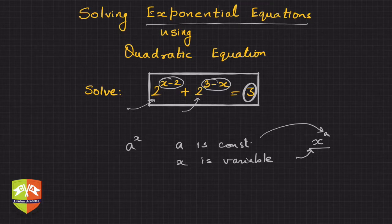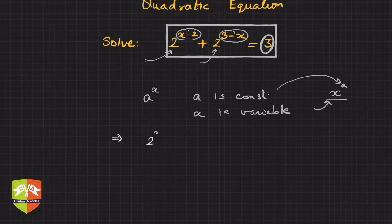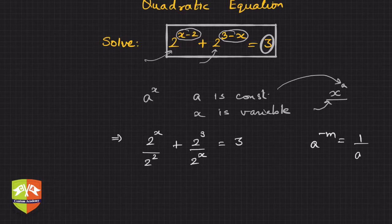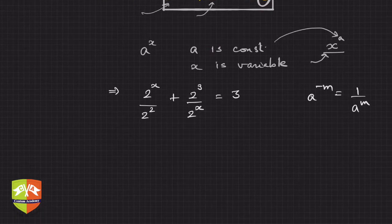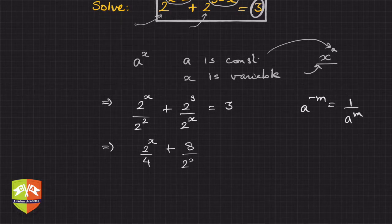How do we solve this? Let's simplify using exponential rules. We can write 2 to the power (x minus 2) as 2 to the power x divided by 2 squared. Similarly, 2 to the power (3 minus x) becomes 2 cubed divided by 2 to the power x, which is 8 upon 2 to the power x. So the equation becomes 2 to the power x over 4 plus 8 over 2 to the power x equals 3.